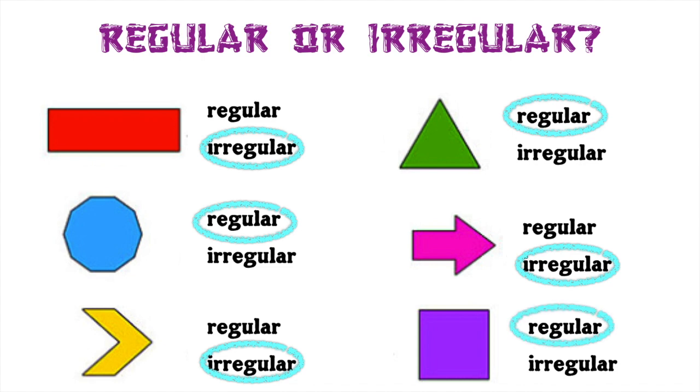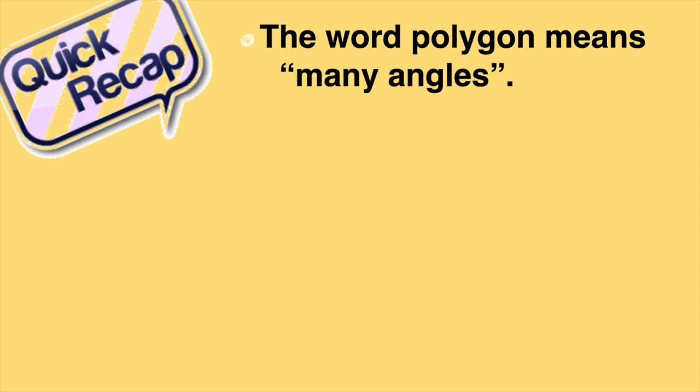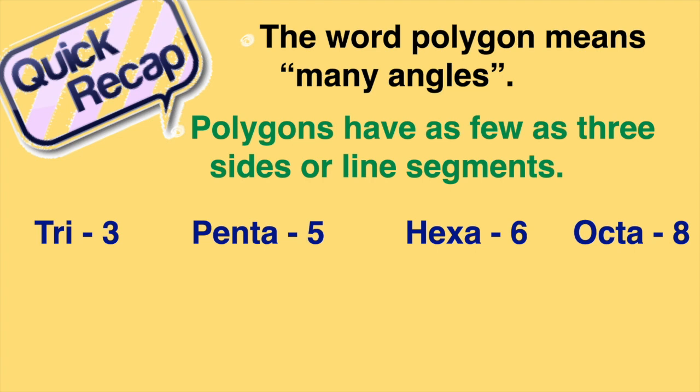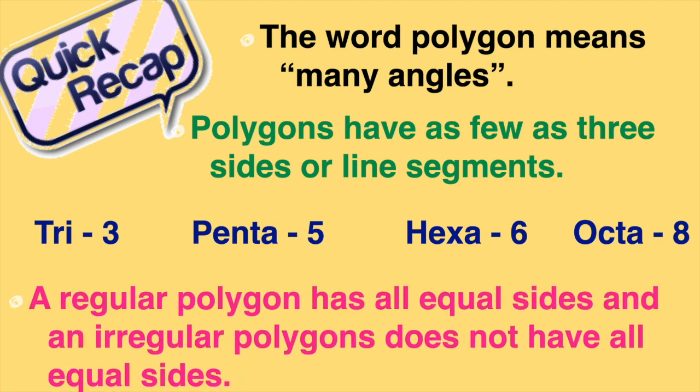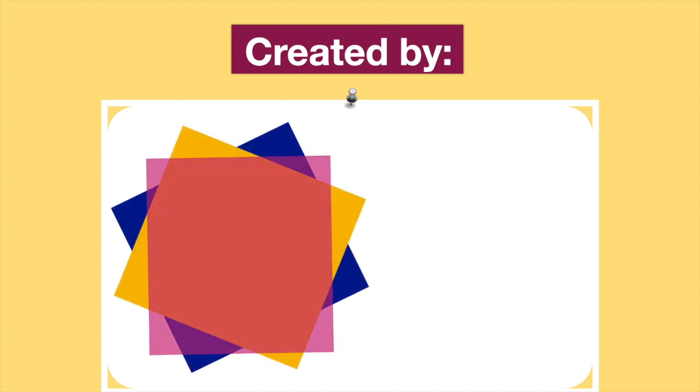Let's do a quick recap now. Today we learned that the word poly means many angles. We learned that polygons have as few as three sides or line segments. Some examples of polygons are triangle meaning three, pentagon meaning five, hexagon meaning six, and octagon meaning eight. We also know that a regular polygon has all sides equal and an irregular polygon does not have all sides equal. This lesson was created by Miss Antonia Vang.